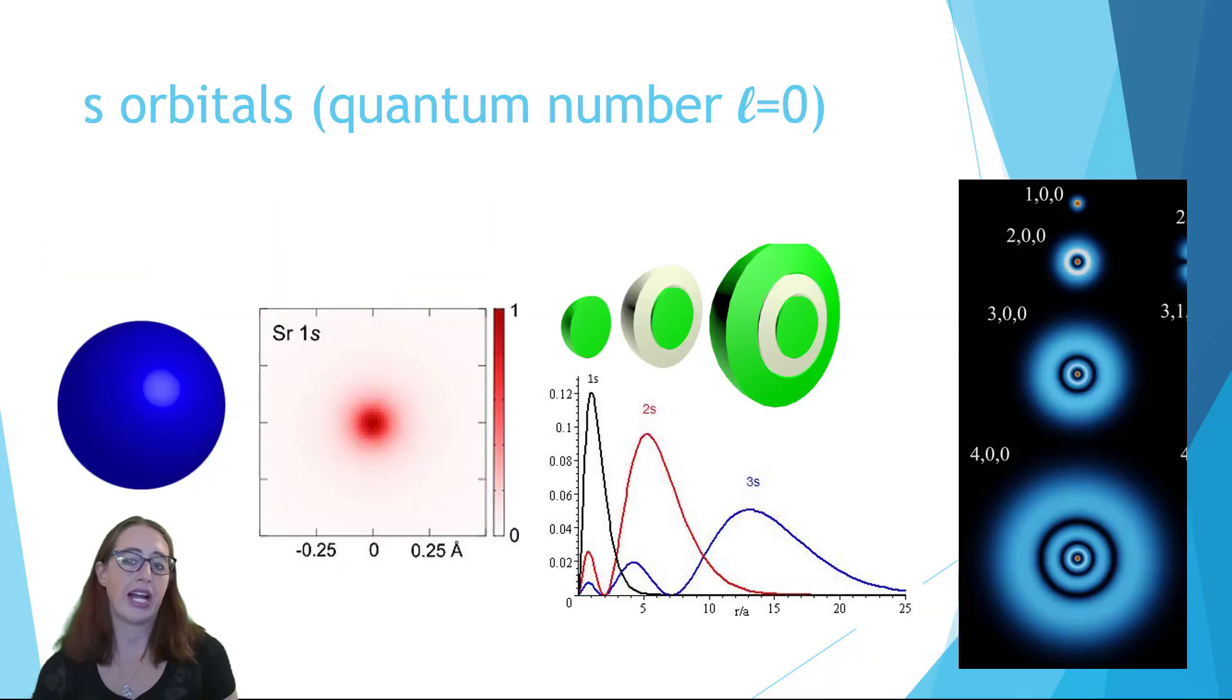So why, if orbitals are actually these complex distributions, do we represent them so simply? Well, quite frankly, because it's hard to draw. It's even hard to draw when using a computer, unless you're pretty good with graphics or simulation software. And so simple shapes are used to make life easier when we're drawing things. But you still want to be imagining the orbitals with these little details that all these different forms and representations are showing you.